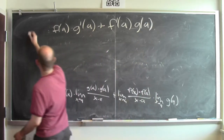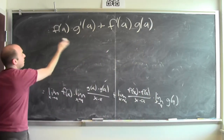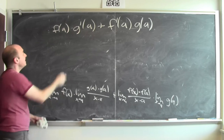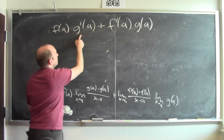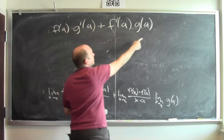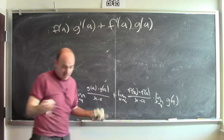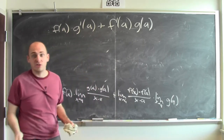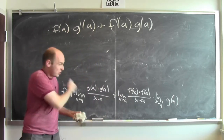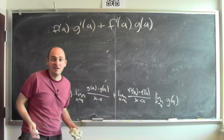And there we go. This is the derivative of the product of f and g — it's the first function times the derivative of the second, plus the derivative of the first times the second. That's exactly what we wanted to show, and we did it just using the definition of derivative.